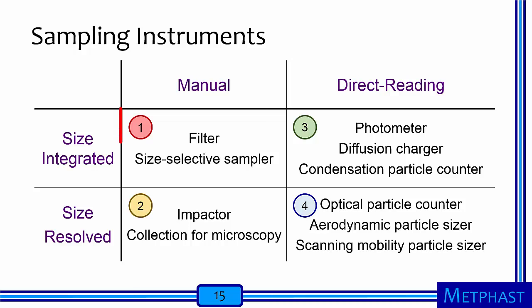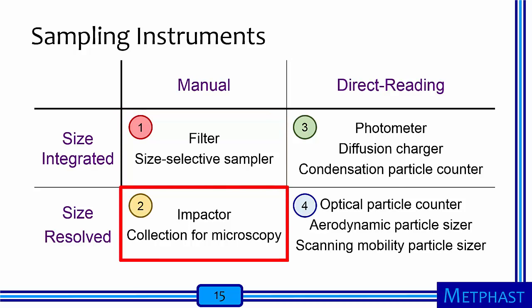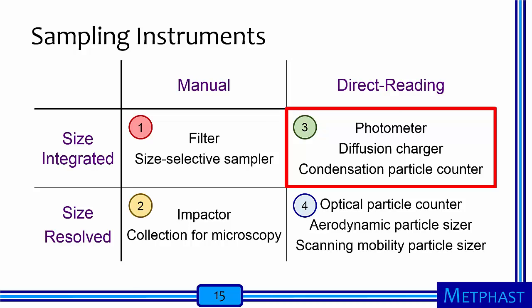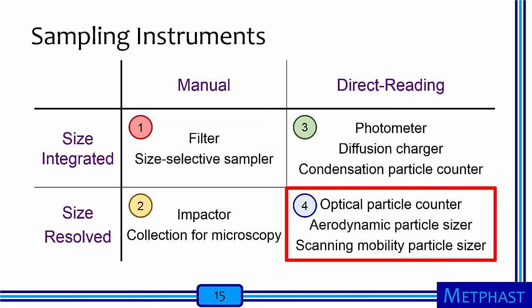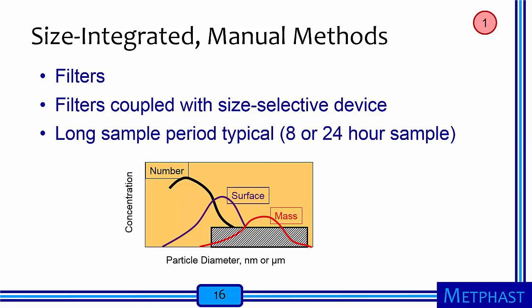There are many different types of sampling instruments. We can group them into categories including manual instruments that are size-integrated, such as open filters or size-selective samplers, and size-resolved samplers, such as impactors or devices that collect samples for microscopy. We can also group them into direct reading instruments that provide an indication of particle concentration integrated over many particle sizes — such as photometers and condensation particle counters — or that provide size-resolved data in real-time, such as the optical particle counter, aerodynamic particle sizer, and scanning mobility particle sizer.